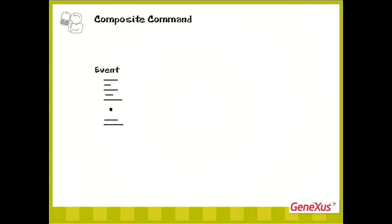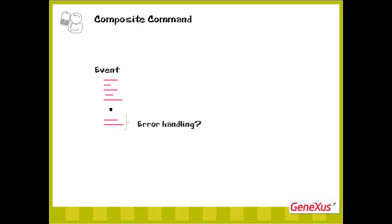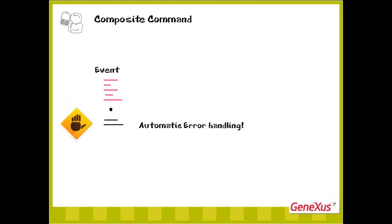What do we need the composite command for? In GeneXus web applications, within an event that is being executed, when an object called returns an error, the execution is not interrupted — it continues in the following sentence. The developer must then handle errors and program the actions necessary within the event's code. If we want the execution to stop upon an error in a sequence of calls, in order for errors to be handled automatically by displaying them on screen without any programming, then we will need a special command — the composite command.